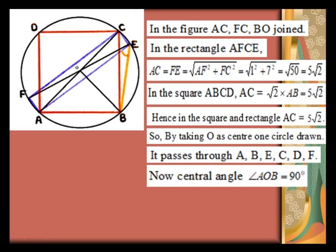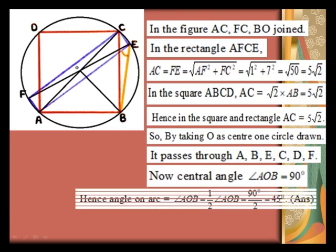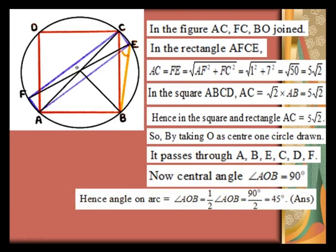Now, central angle AOB equals 90 degrees. Hence, angle on the arc AOB equals half of angle AOB, that is 90 by 2, which equals 45 degrees.